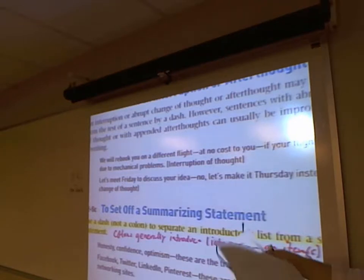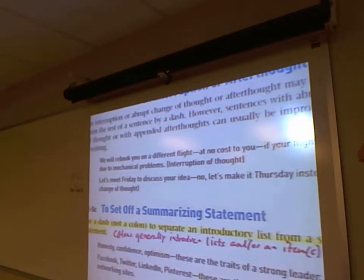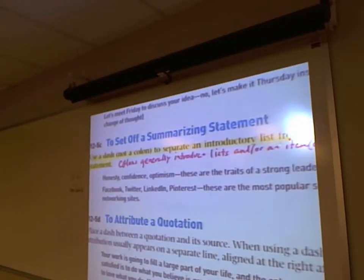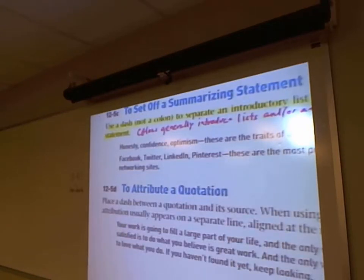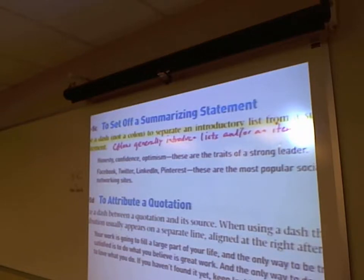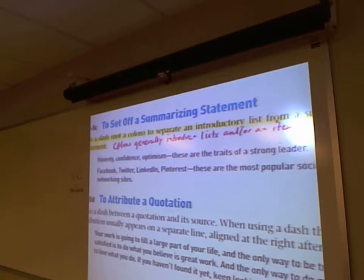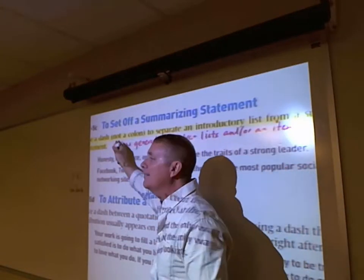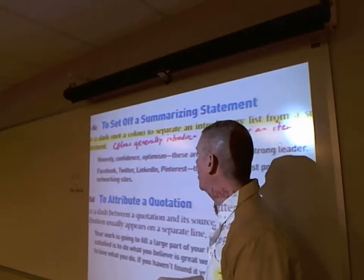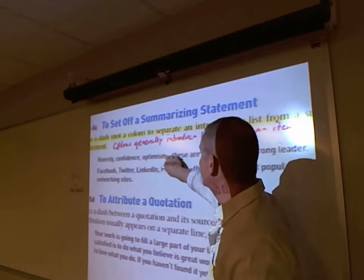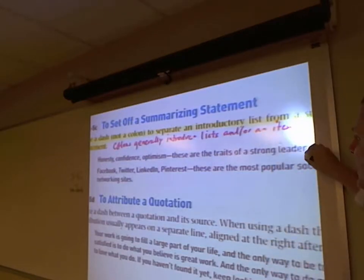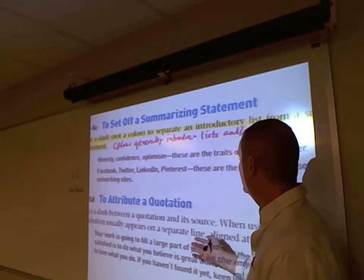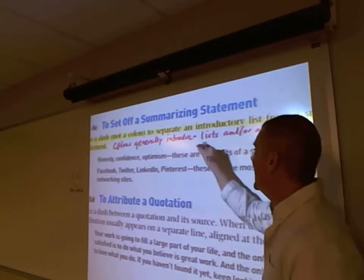Use a dash — not a colon — to separate an introductory list from a summarizing statement. Colons generally introduce lists that are part of an independent clause — that's why you use a colon. But when there is no independent clause, use the dash. 'Honesty, confidence, optimism — these are the traits of a strong leader.' 'Facebook, Twitter, LinkedIn, Pinterest — these are the tools.' Only if it were an independent clause would I use a colon; since it's not, I use a dash.